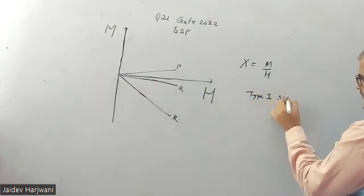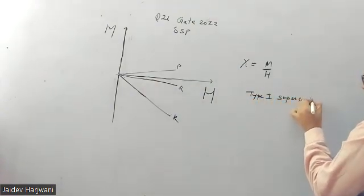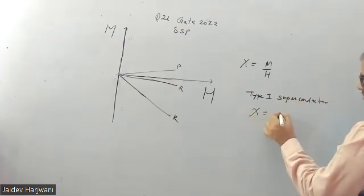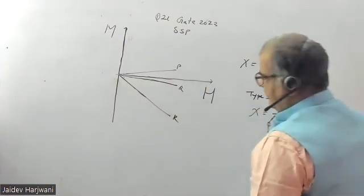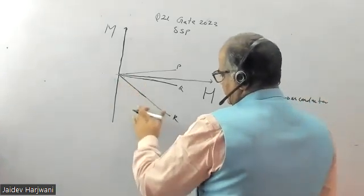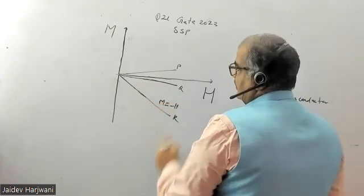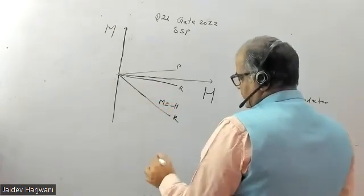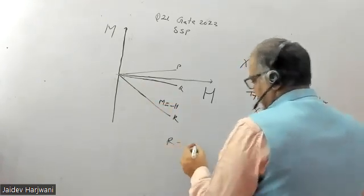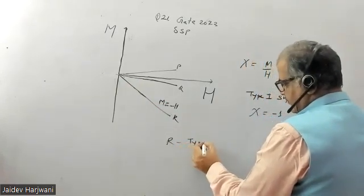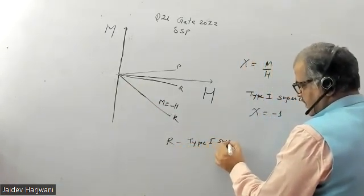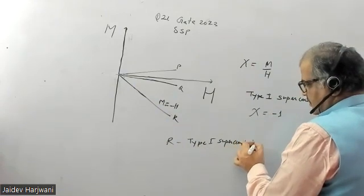The susceptibility value for type 1 superconductor, the chi value is minus 1. If you see this graph, this shows M versus minus H. So we can say this R is corresponding to type 1 superconductor.